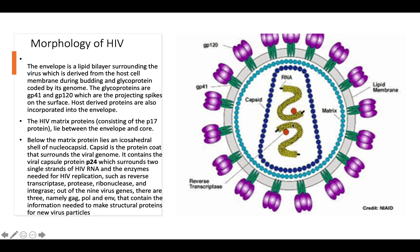The nucleocapsid surrounds the two single-stranded RNA, and there is also an enzyme called reverse transcriptase. The work of the reverse transcriptase is to convert RNA into DNA. These are the key structures of HIV morphology. Please follow the next part for the replication of the virus. Thank you.